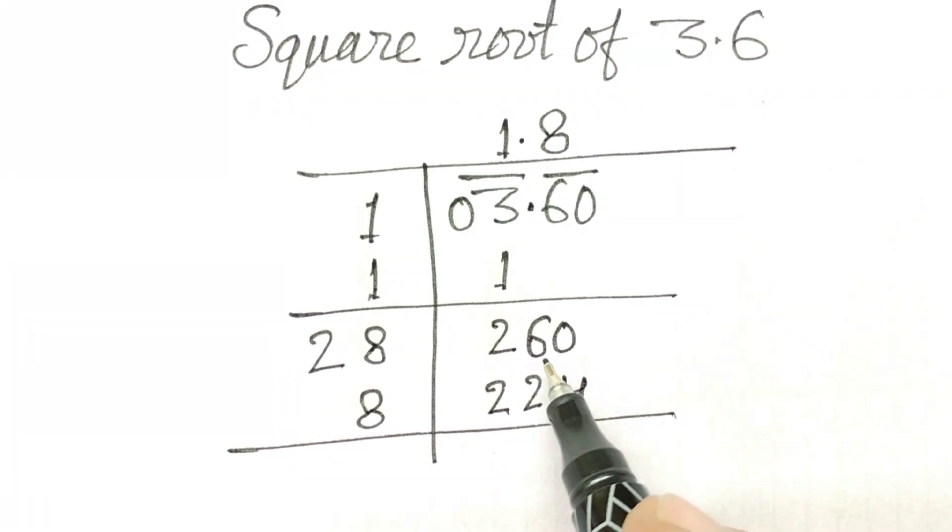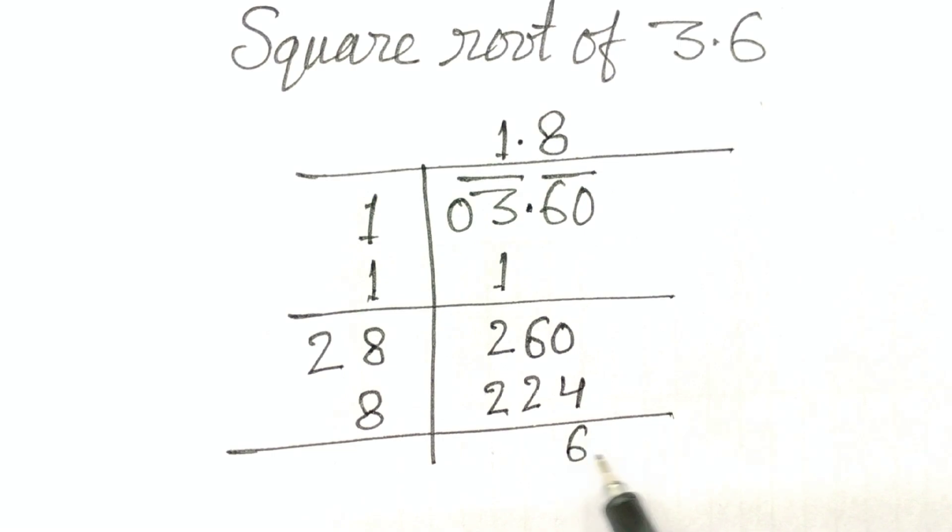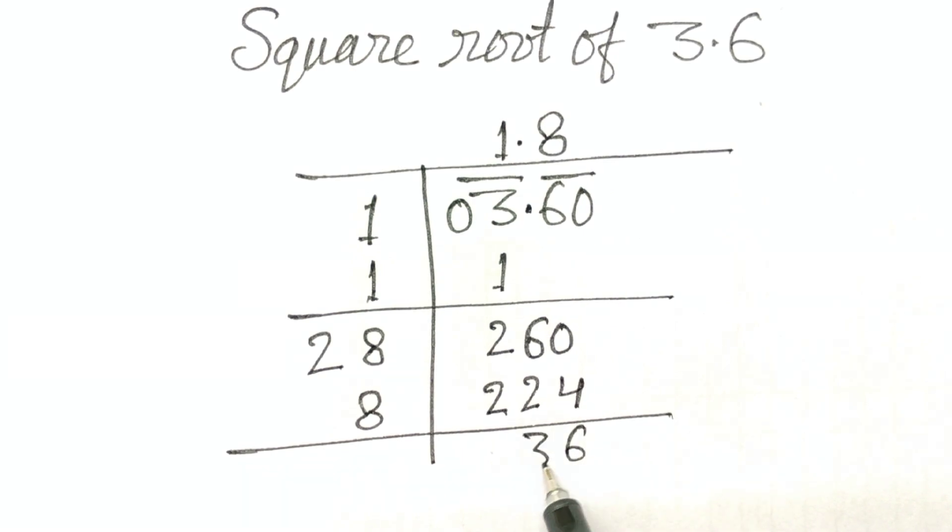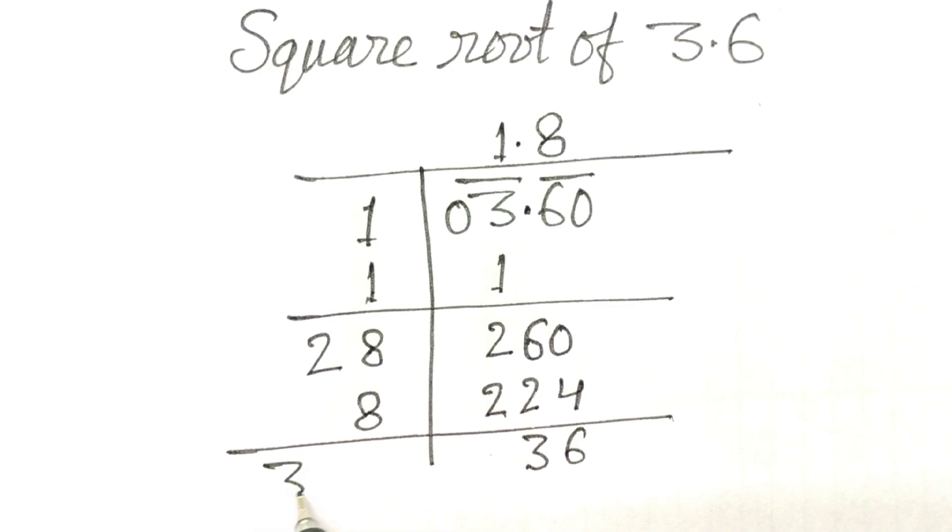Now, 2, 6, 0 minus this, 6, 3. And 28 plus 8, 36.